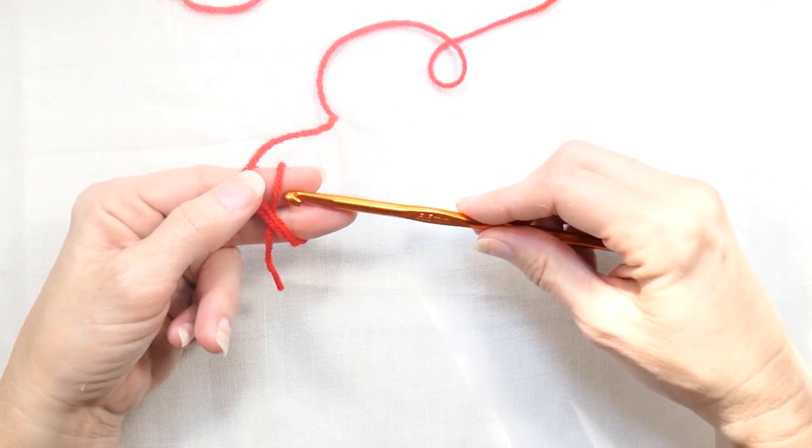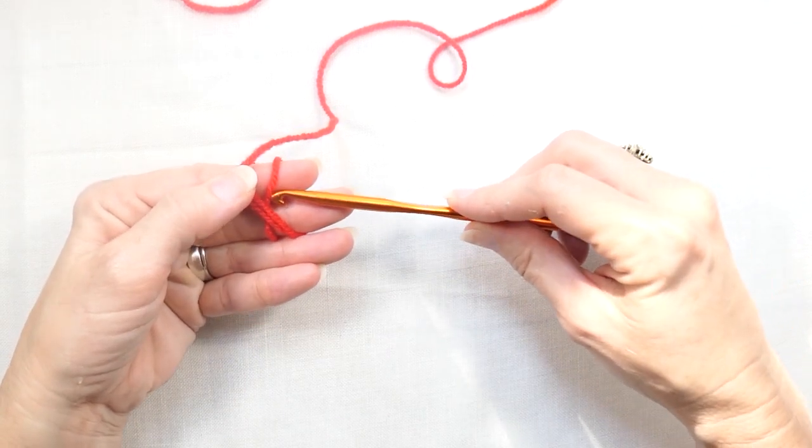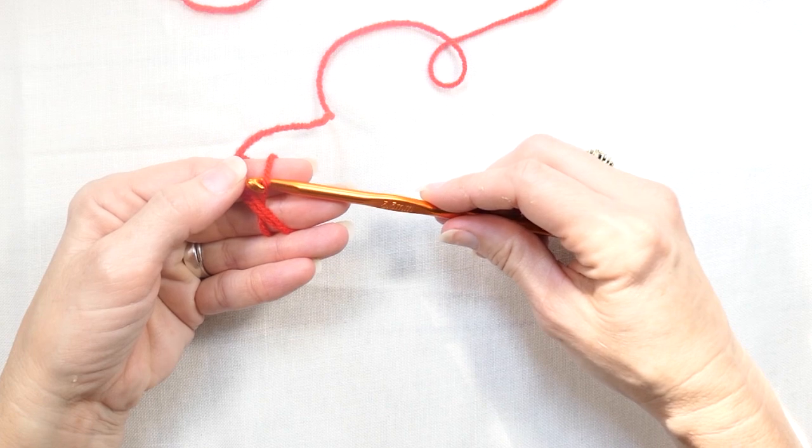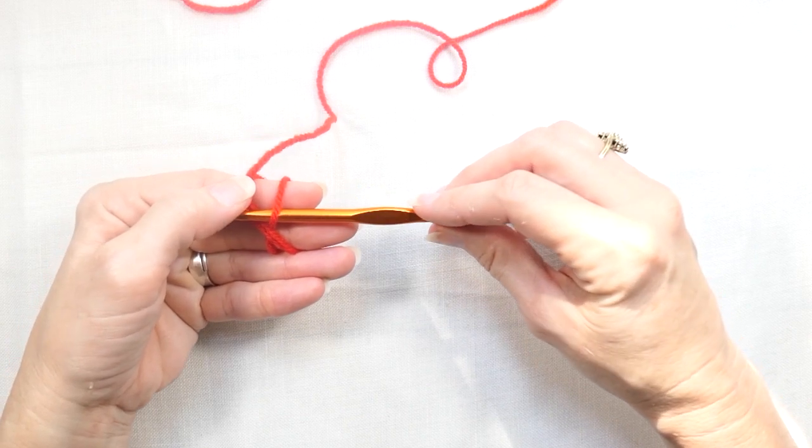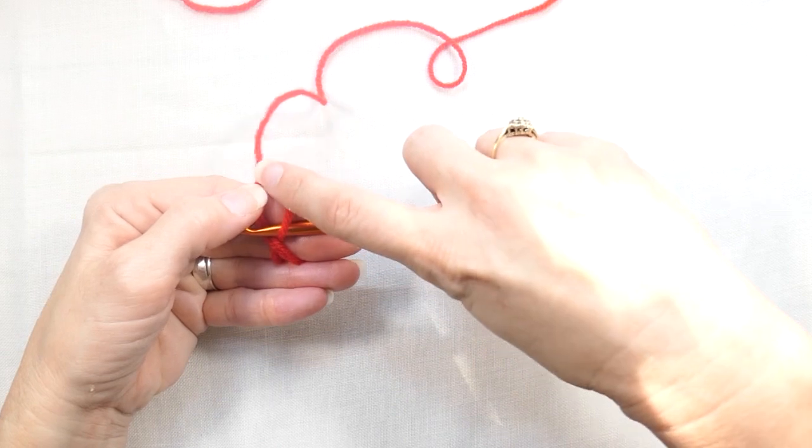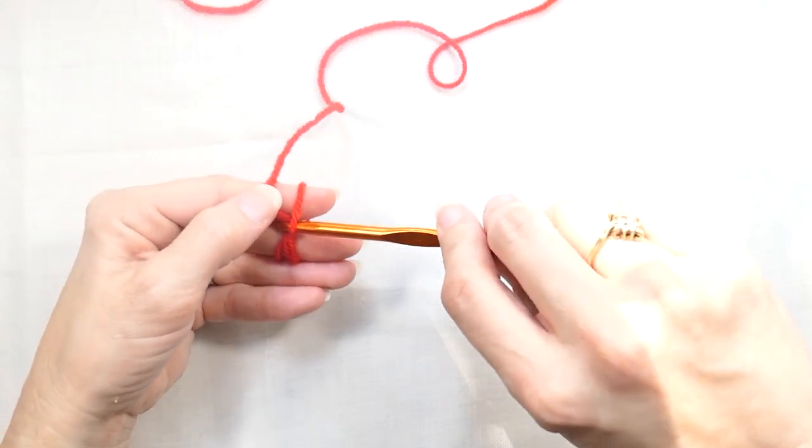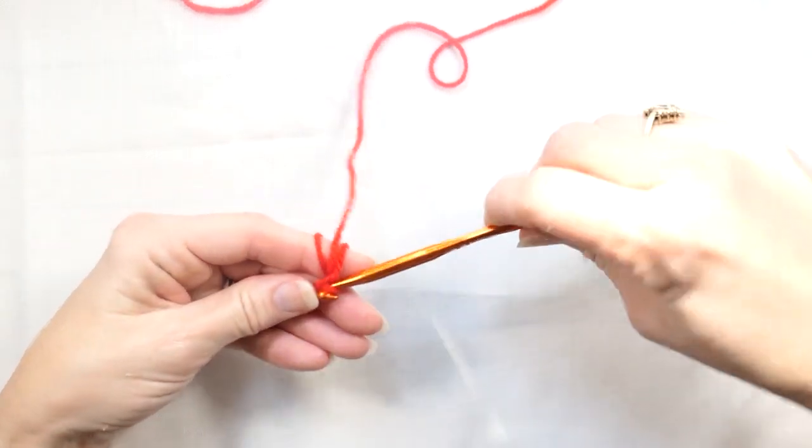And what I'm going to do now is I'm going to take my hook and I'm going to put it under this first little arm here of the X and then I'm going to put it over the two and I'm just going to pull that up right like that.